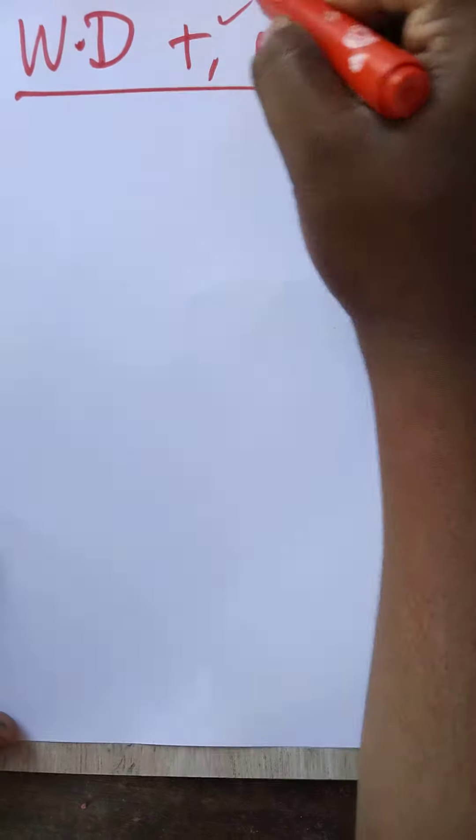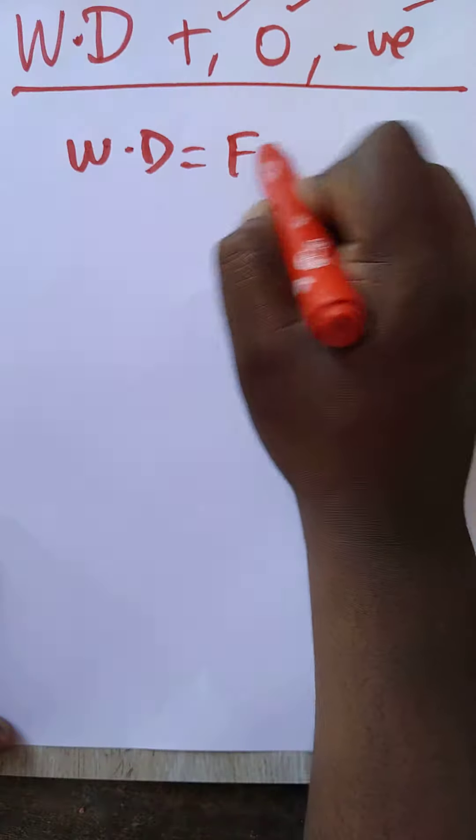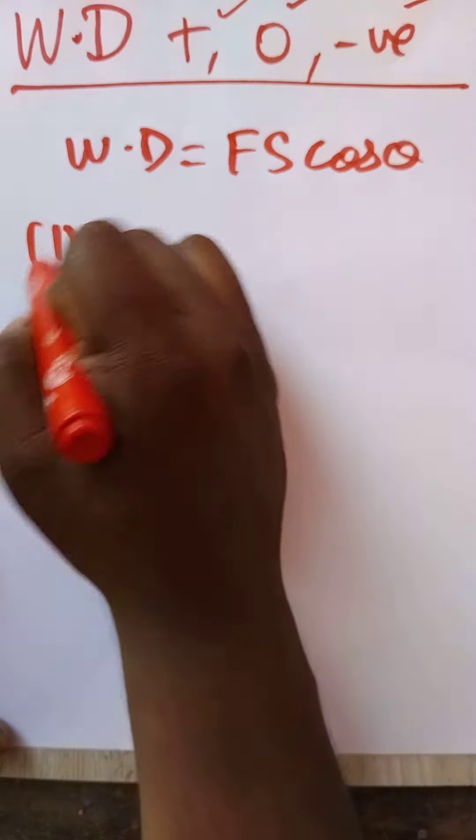Today we are going to see examples of positive work done, zero work done, and negative work done. First we will learn the work done formula: work done is equal to FS cos theta.